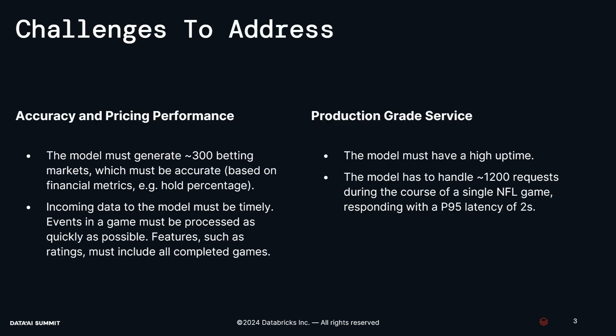When building production machine learning systems there's a wide variety of challenges to address, and the entire field of machine learning operations is there to describe and provide solutions for those challenges. I'm not going to focus on everything, but I wanted to call out a couple of points particularly relevant for DraftKings. The first bucket of considerations is around accuracy and pricing performance — obviously a concern for every production system. For our specific use case we have to have a model that generates 300 betting markets, and they have to be accurate.